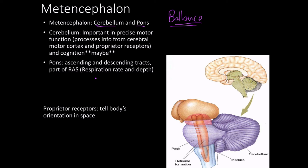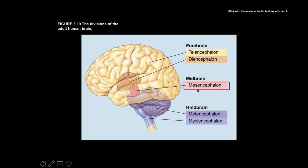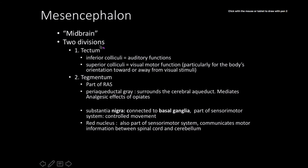The mesencephalon — 'mesen' meaning middle, like mesenchyme or mesoderm — is the middle part of the brain. It consists of two divisions: the tectum and the tegmentum. The tectum consists of the inferior and superior colliculi. The inferior colliculi plays a role in auditory function, and the superior colliculi plays a role in visual motor function, particularly for the body's orientation toward or away from certain visual stimuli.